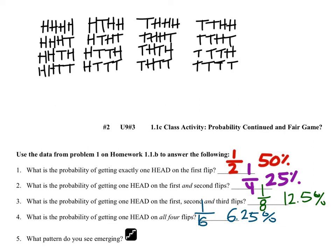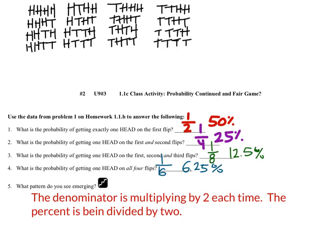Multiplying the denominator by two also cuts the percentage in half. Cutting 6.25% in half gives 3.125%, which matches 1/32. So the pattern we see is that either the denominator is being multiplied by two each time, or the percent is being divided by two — both are legitimate observations.